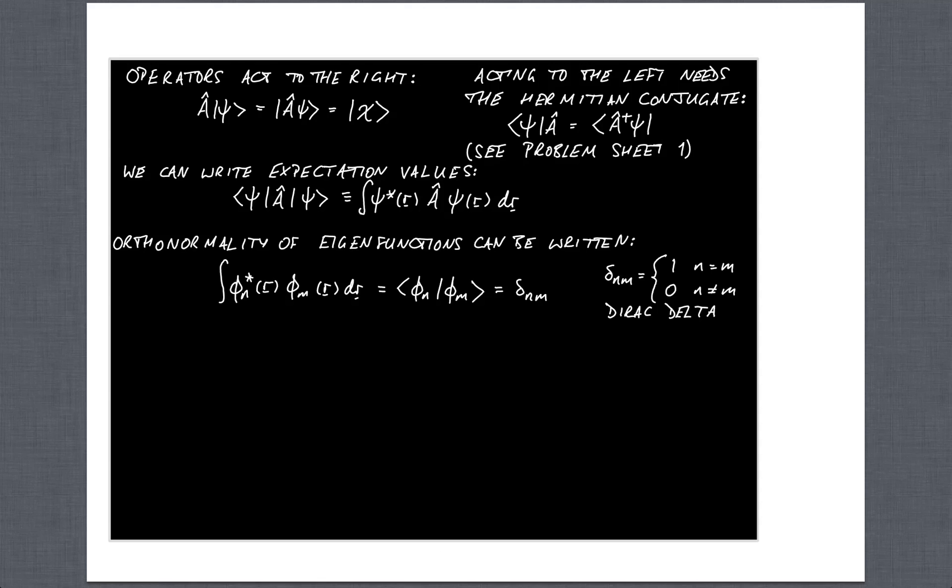If you want to think about the orthonormality of eigenfunctions then if we've got two eigenfunctions let's say phi n and phi m then we write that in normal notation in position notation as the integral between the two but in Dirac notation it's simply bra phi n ket phi m and that can be written very simply as delta subscript nm and that's the Kronecker delta so if the two subscripts are the same delta is equal to one, if they differ delta is equal to zero.